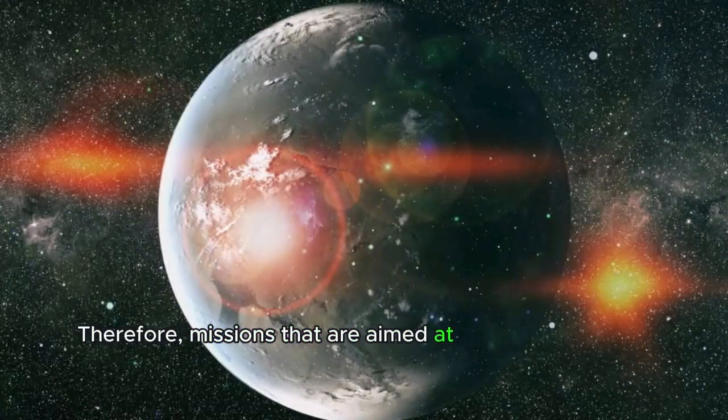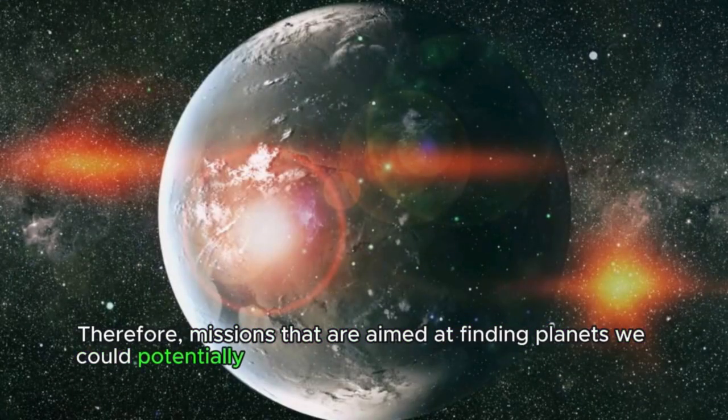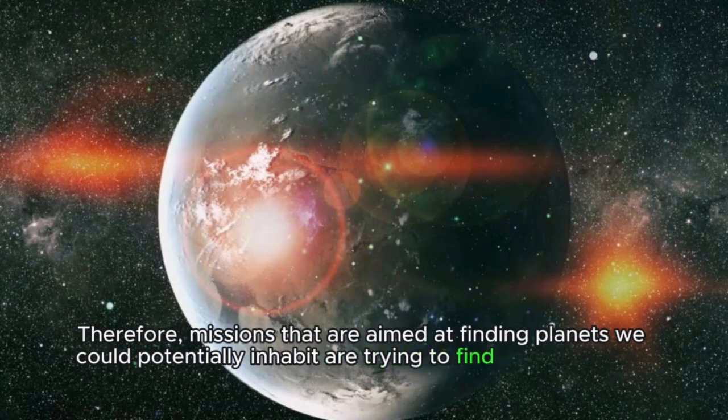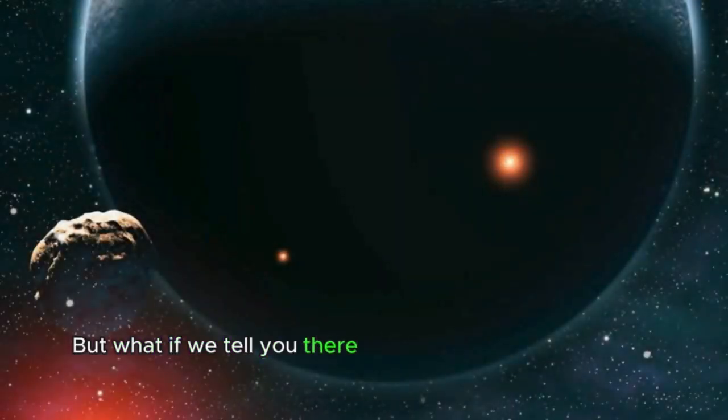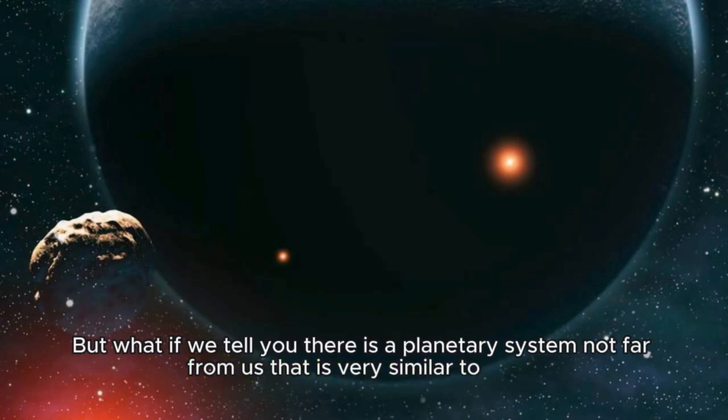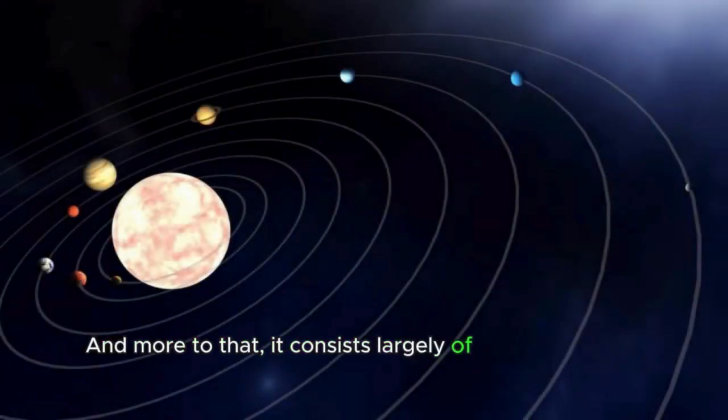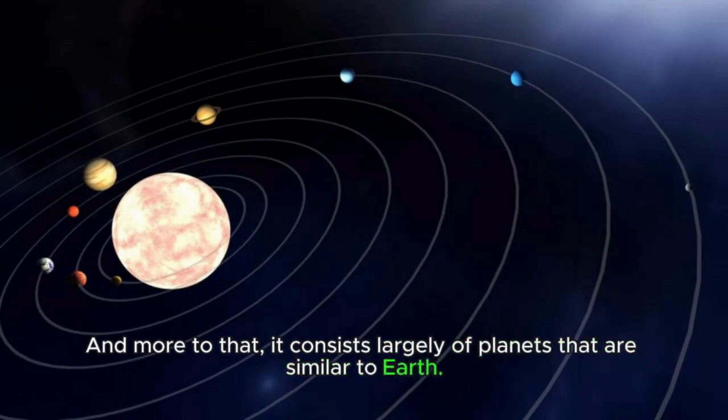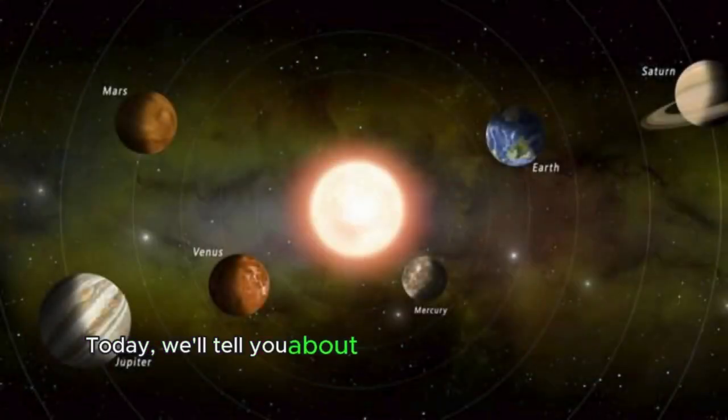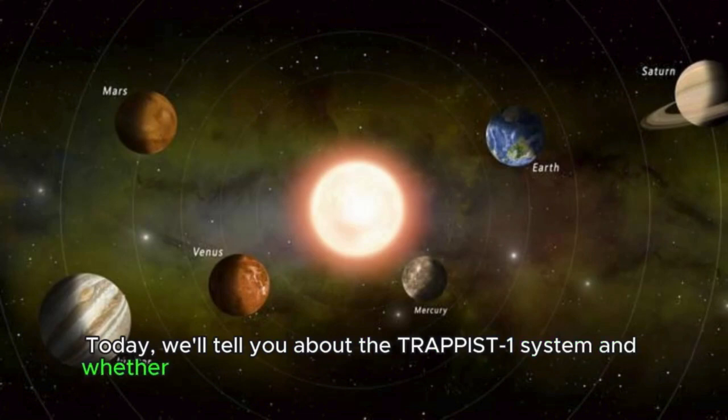Missions aimed at finding planets we could potentially inhabit are trying to find them in similar star systems. But what if there is a planetary system not far from us that is very similar to ours, consisting largely of planets similar to Earth? Today, we'll tell you about the TRAPPIST-1 system and whether or not its planets would be able to support life.